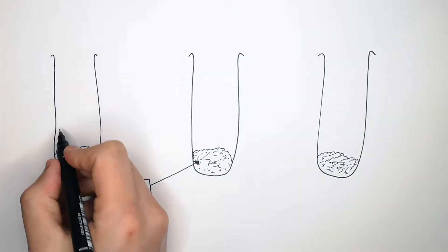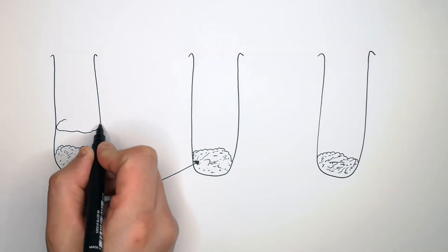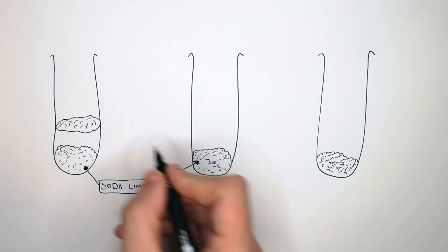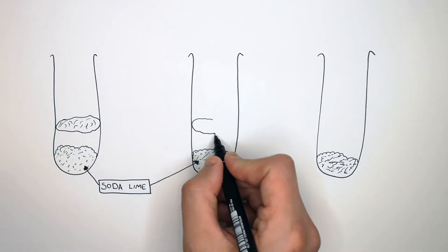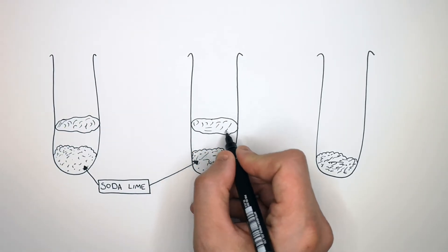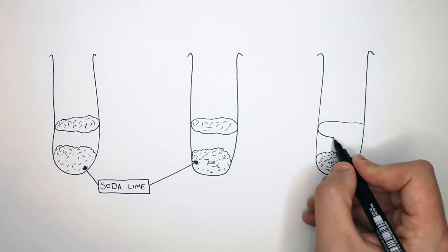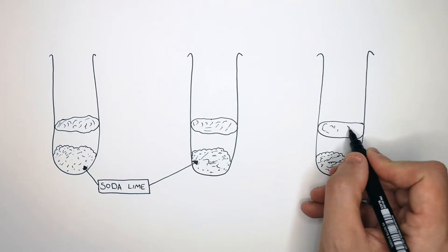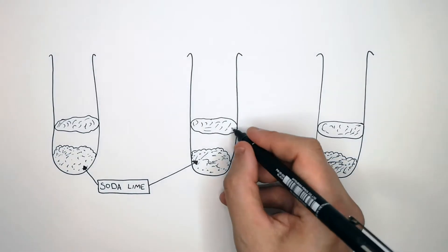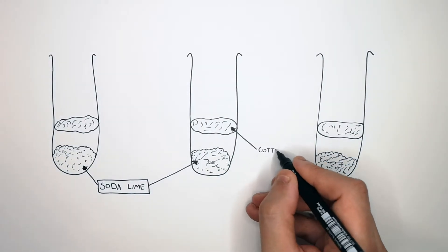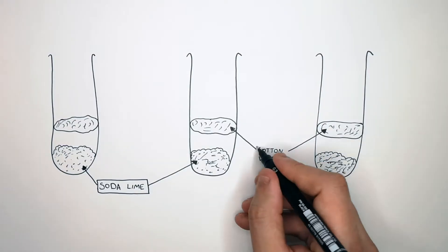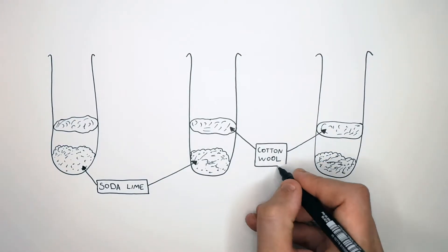You now place cotton wool inside the test tube above the soda lime. This is so the wood lice can stand on it in the test tube. Remember, the cotton wool is placed in the test tube for the wood lice to stand on.